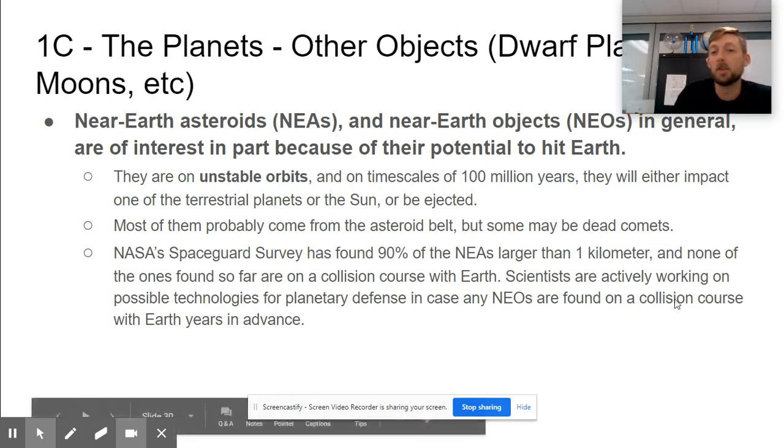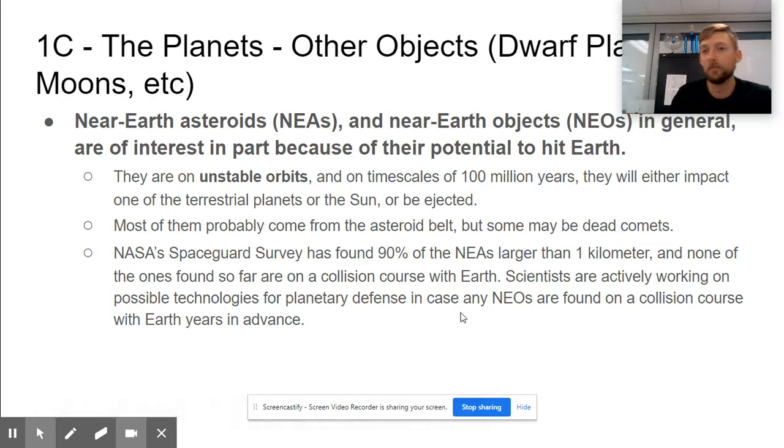Scientists are actually working on ways to hopefully keep any near-Earth objects or near-Earth asteroids from colliding with Earth. If we can find them soon enough and see they're coming, hopefully we can do something. Maybe drill a hole in them and shove a nuke down the hole and blow it around Earth. It's been done before, I suppose.